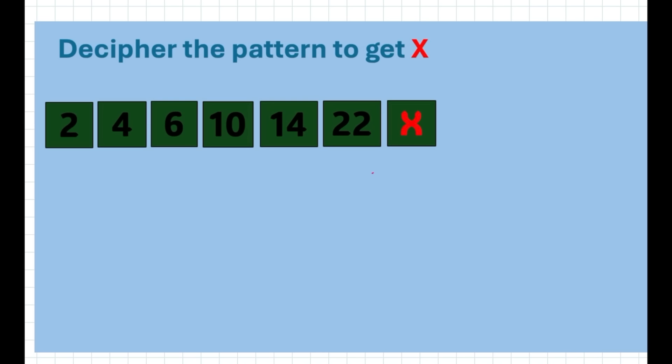If you add or subtract, it doesn't seem to relate. This is a classic Fibonacci series, which means that they relate to each other. Fibonacci is spelled F-I-B-O-N-A-C-C-I.